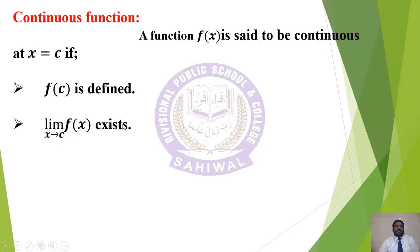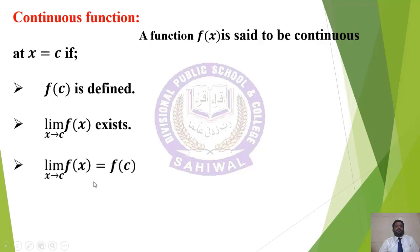Second condition: limit x→c f(x) exists. This means both the left hand limit and right hand limit must exist and be equal. Third condition: the limiting value must be equal to the defined value — limit x→c f(x) = f(c). If all three conditions are satisfied, the function is continuous.